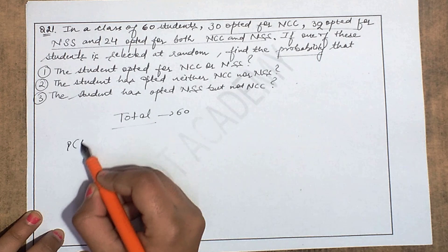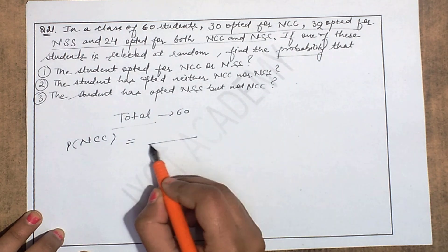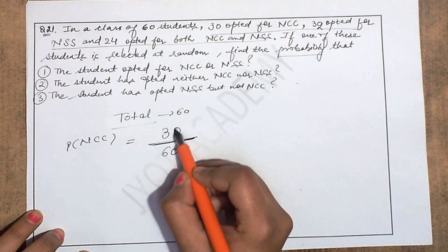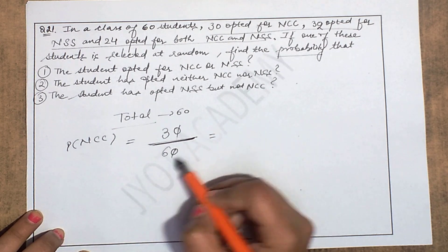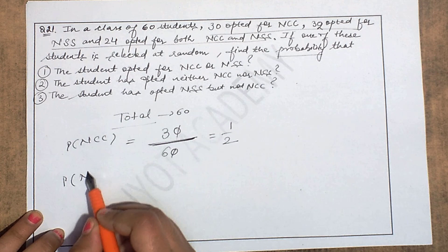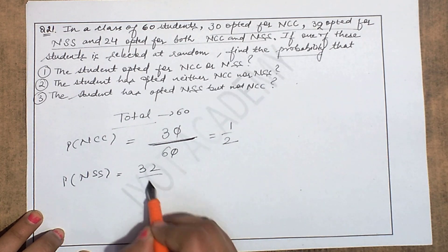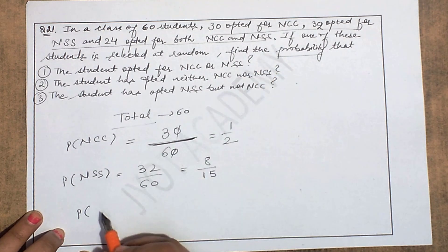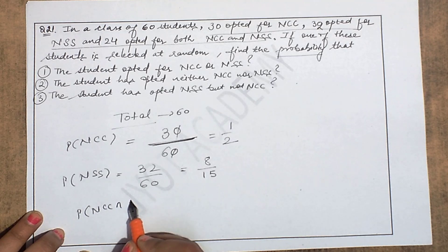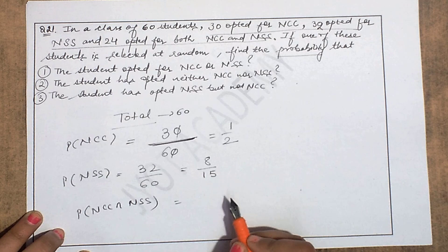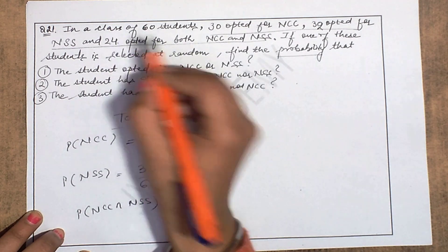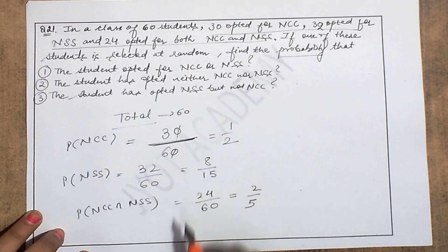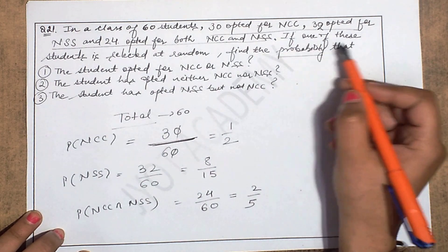The total base is 60 students. P(NCC) = 30/60 = 1/2. Similarly, P(NSS) = 32/60 = 8/15. P(NCC ∩ NSS) = 24/60 = 2/5, since 24 students opted for both. These probability values are now ready to use.